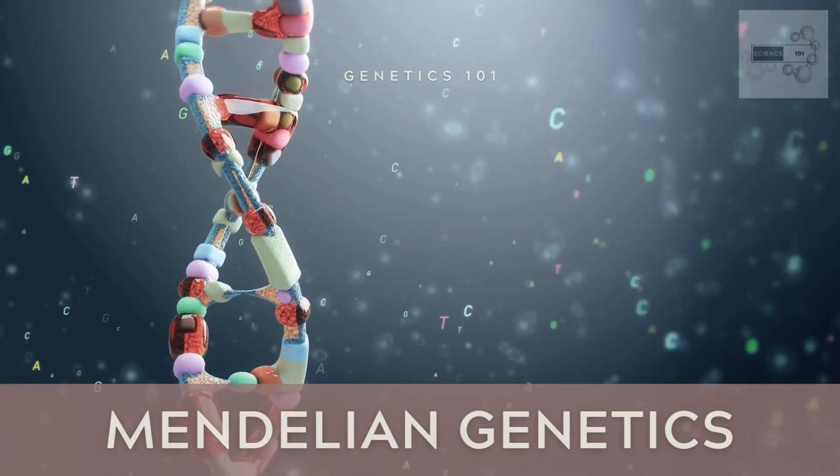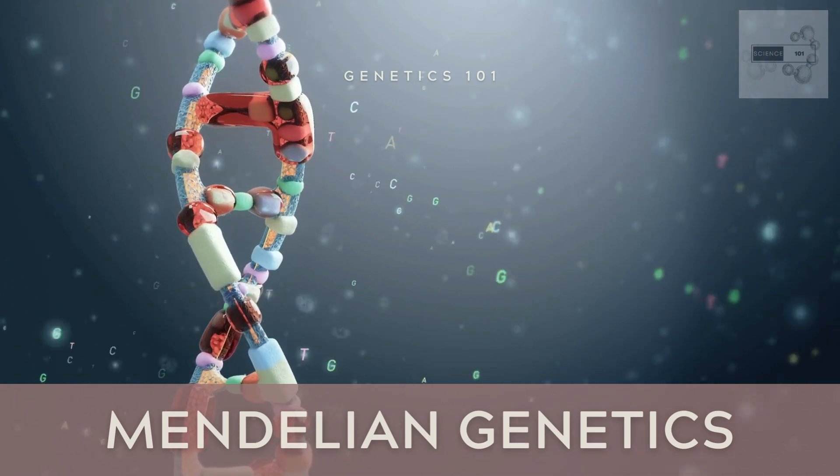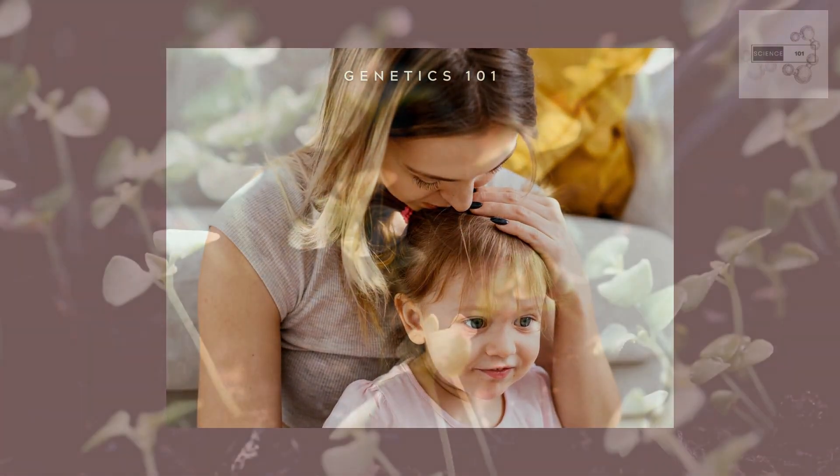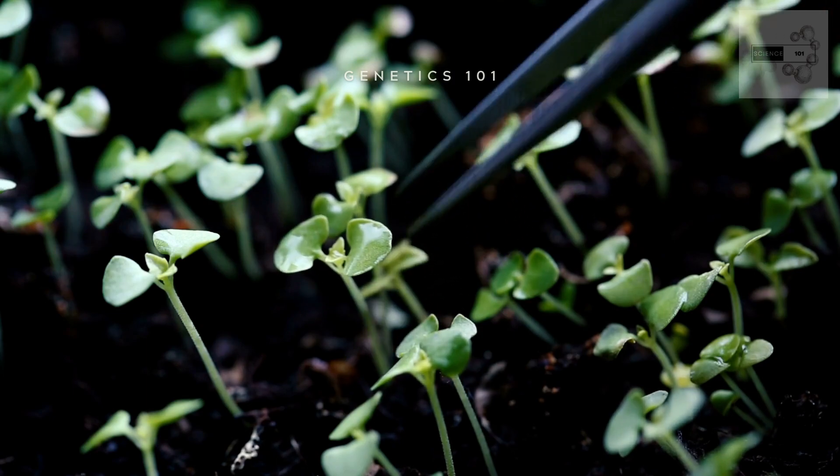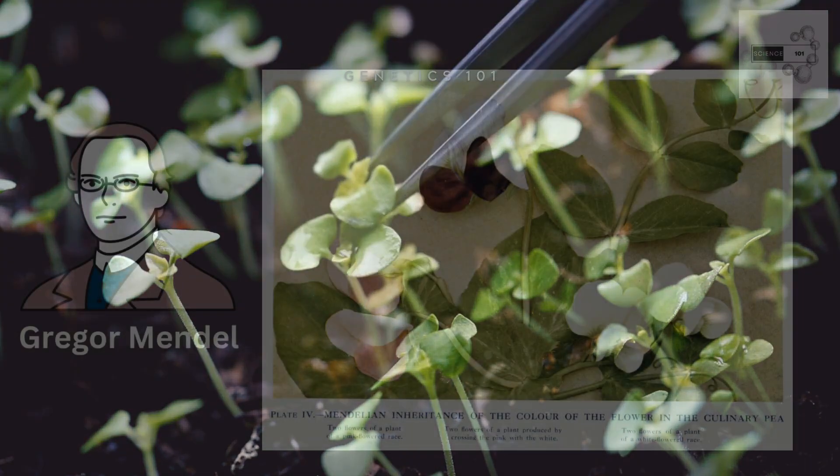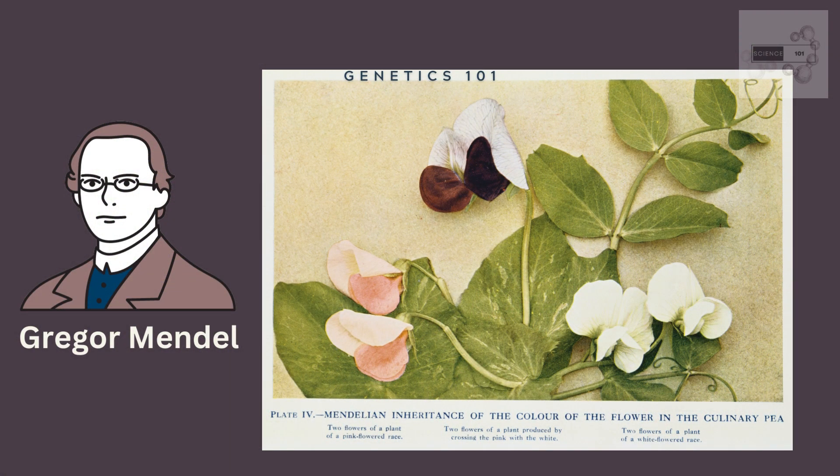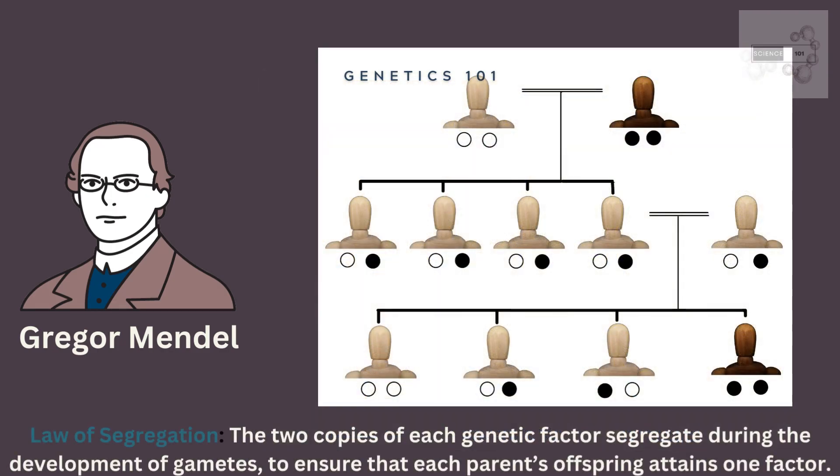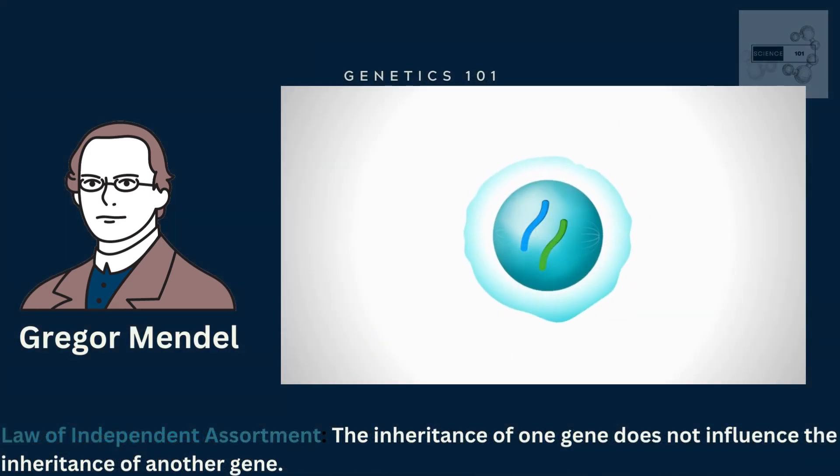Mendelian genetics, named after the pioneering geneticist Gregor Mendel, describes the inheritance of traits through the transmission of genes from one generation to the next. Mendel's laws of inheritance describe the rules governing the inheritance of traits in sexually reproducing organisms. These laws include the law of segregation, which states that the two alleles of a gene separate during gamete formation, and the law of independent assortment, which states that the inheritance of one gene does not influence the inheritance of another gene.